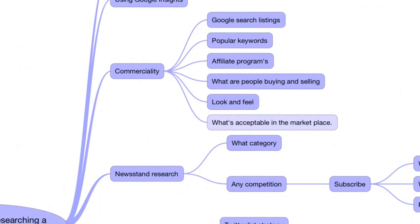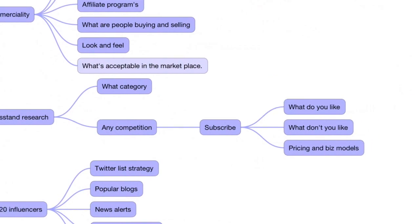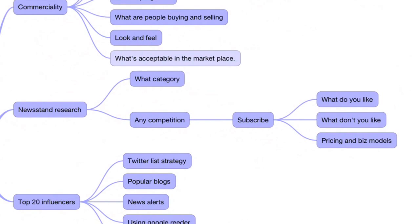What's acceptable in that marketplace — I'm always interested to have a look at that. Then the next thing is newsstand research. That's the market we're going to be in with the magazine. So it's important to understand who's who in the zoo there. What category would we go in? Is there any competition? I would instantaneously subscribe to that competition, make a list of what I like and don't like, look at their pricing and business models — are they accepting advertising, doing affiliate stuff, list building?